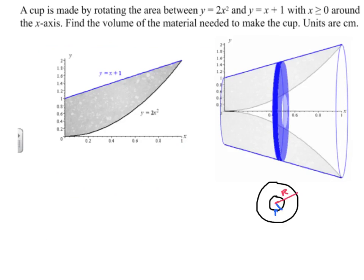If I wanted to find the area of the washer — it looks like a sprinkled donut — I would do the area of the big circle minus the area of the little circle. I could pull a π out and have π(R² - r²). That is how I find the area of that washer. Since our width is dx, our volume would be that area multiplied by the height dx.